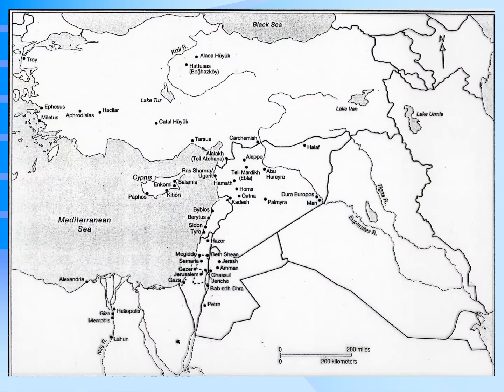Here is a map of the ancient Near East. On the right side to the east are the Tigris and Euphrates rivers — that is the area of Mesopotamia. Just to the east of those rivers is the area of modern Iran, which in ancient times was known as Persia. To the northwest is Anatolia, which is now modern Turkey, and on its coast you see the famous city of Troy, and from New Testament times, Ephesus.